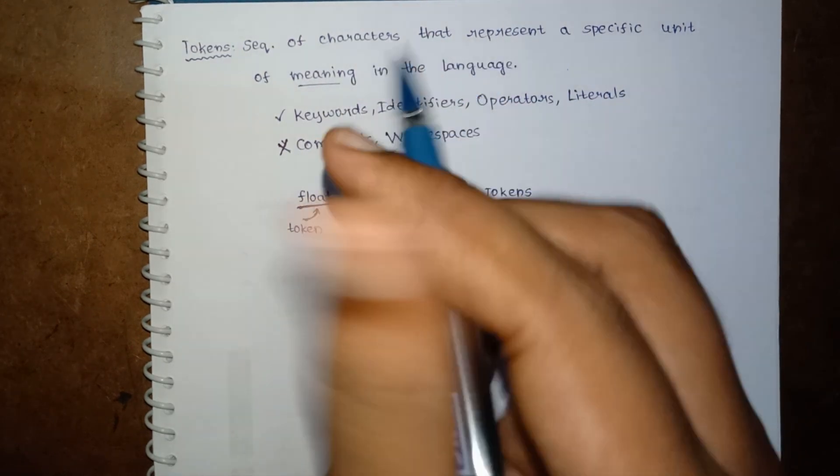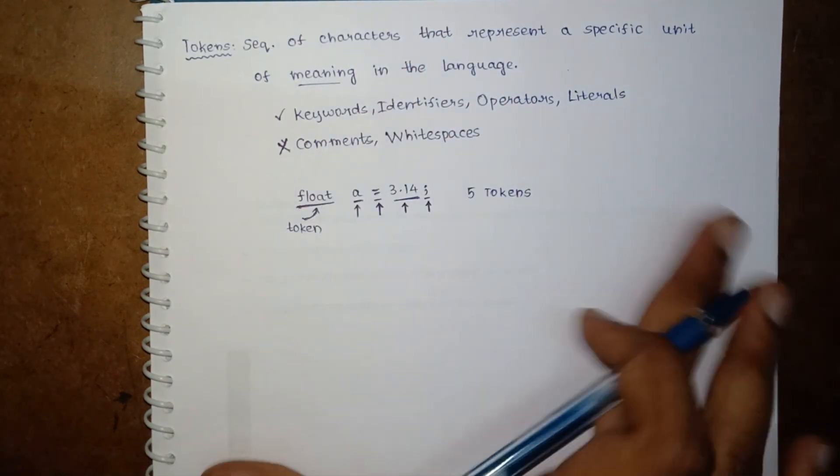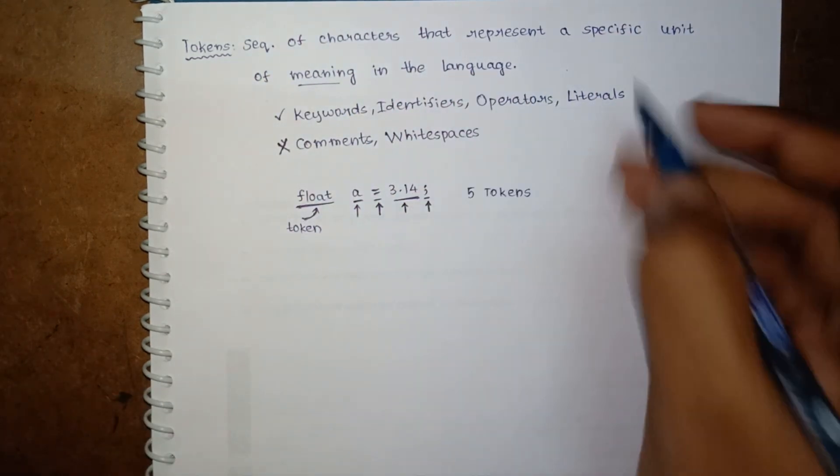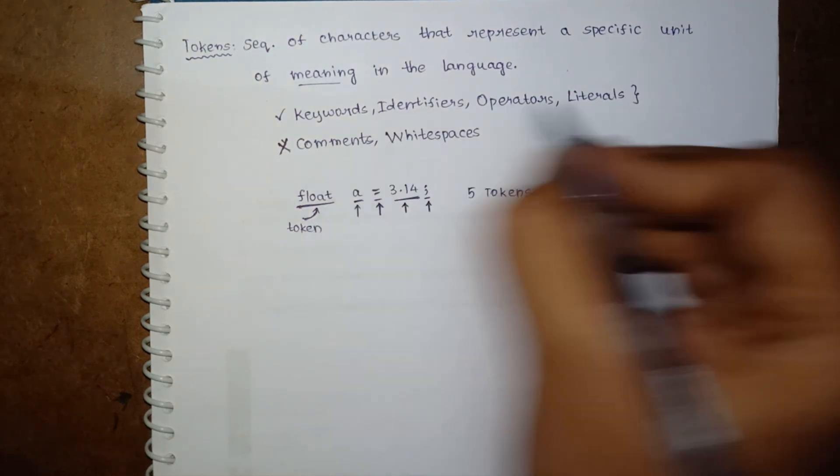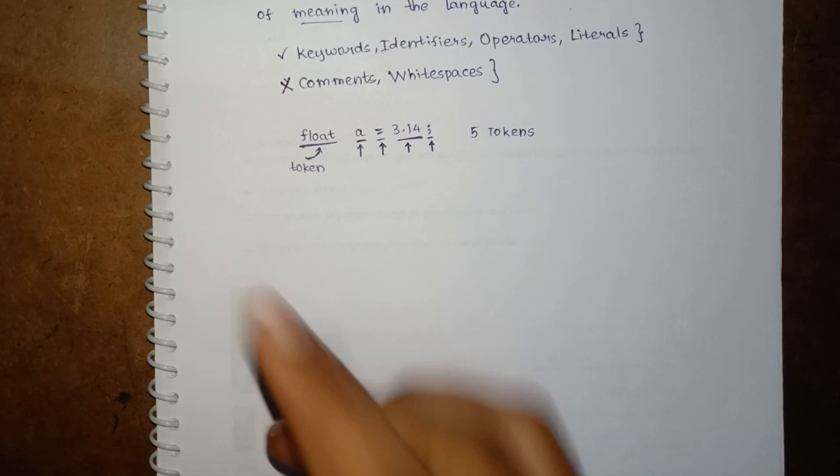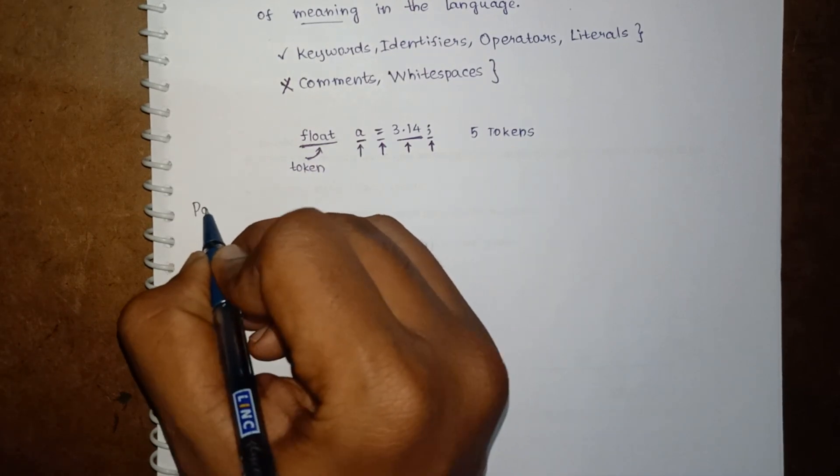A sequence of characters that represent a specific unit of meaning in the language. These can be the tokens, whereas this cannot be the tokens. Next, let us understand about patterns.